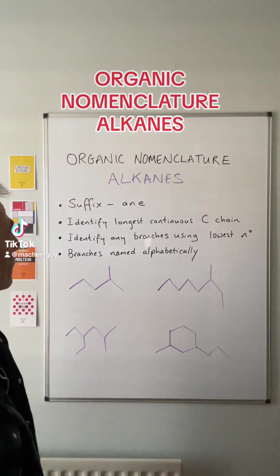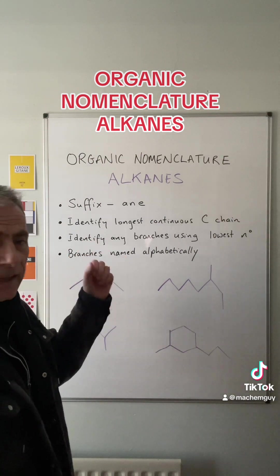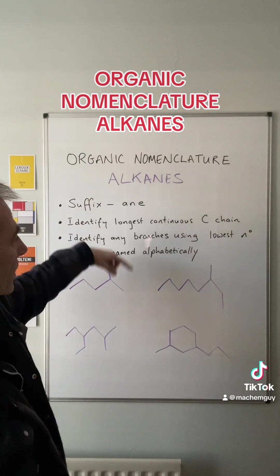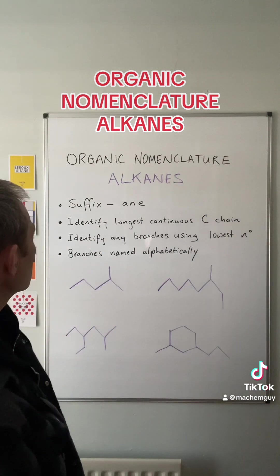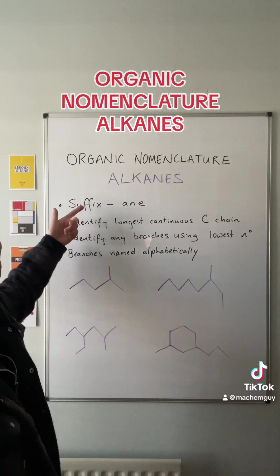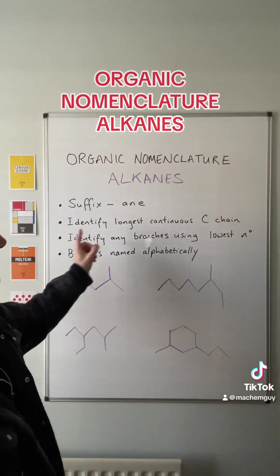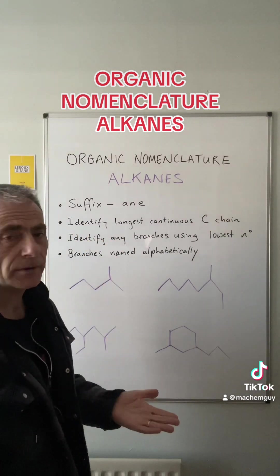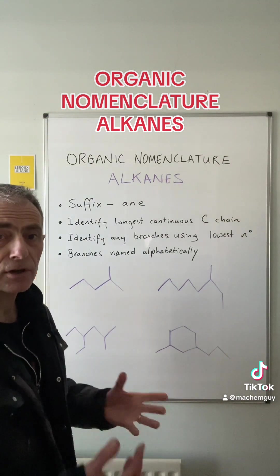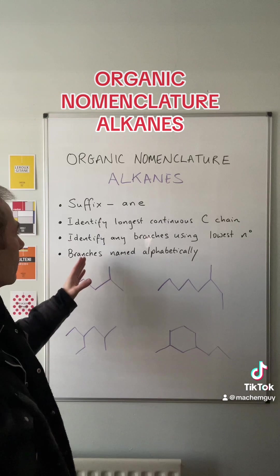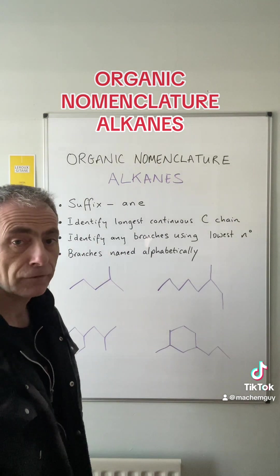I'll make a series of videos looking at organic nomenclature, starting with the alkanes. I'll start every video with the same set of rules and then look at four examples. For alkanes, the suffix or ending is A-N-E. The first thing you've got to do is identify the longest continuous carbon chain, then identify any branches using the lowest carbon number, and if there's more than one branch, name them alphabetically.